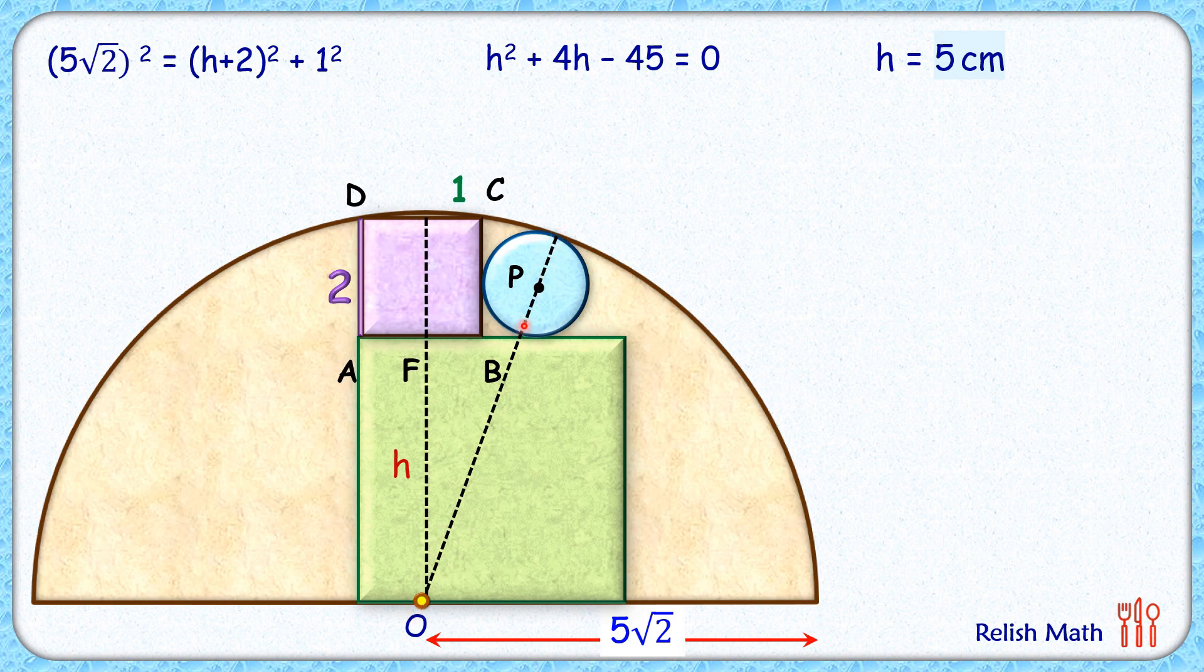Now this full length is radius of semicircle which is 5√2. At present we will assume it as capital R, and this small part is the radius of blue circle. So OP length is nothing but capital R minus small r.